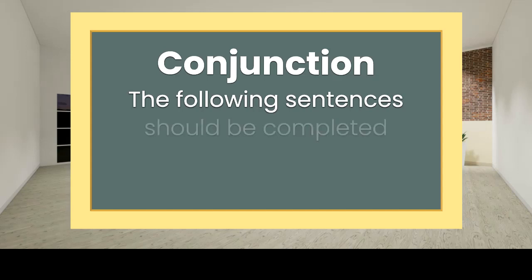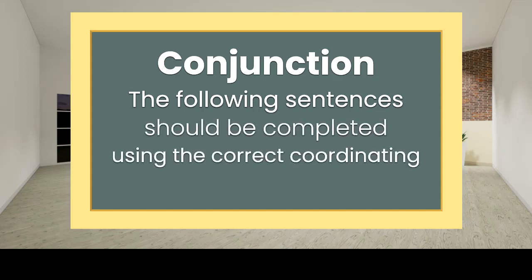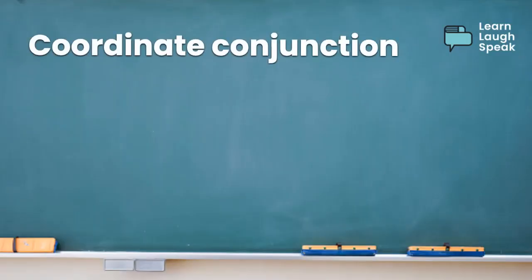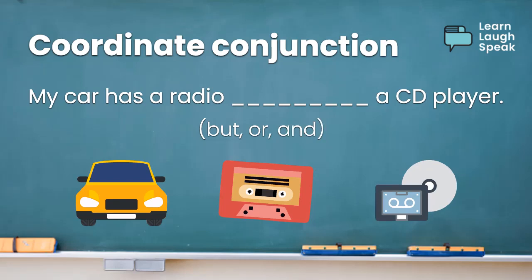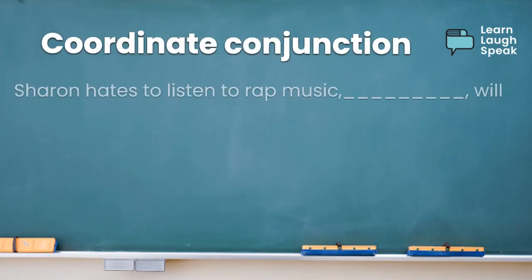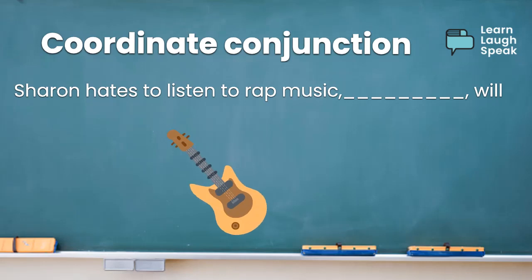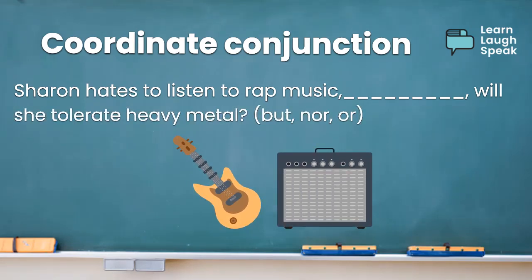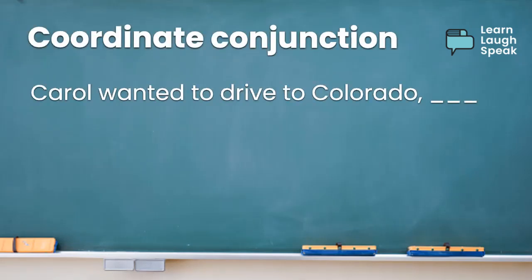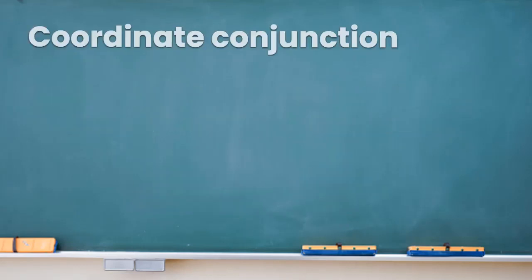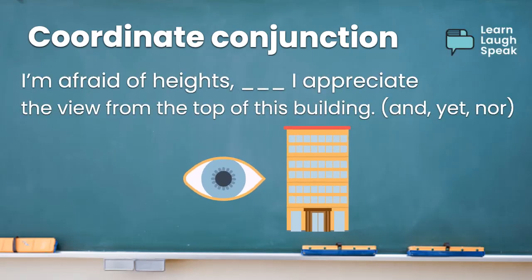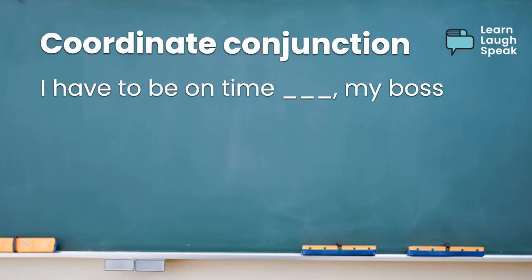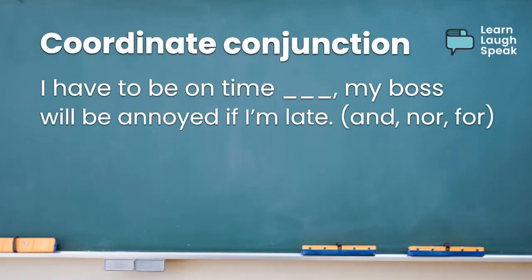The following sentences should be completed using the correct coordinating conjunction. My car has a radio and a CD player. Sharon hates to listen to rap music — will she tolerate heavy metal? Carol wanted to drive to Colorado, but Bill insisted that they fly. I'm afraid of heights, yet I appreciate the view from the top of this building. I have to be on time, or my boss will be annoyed if I'm late.